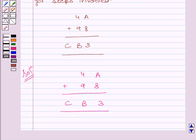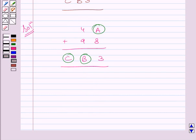Now we need to find values of 3 letters. They are A, B and C. Now study the addition in one's column. What do you see?